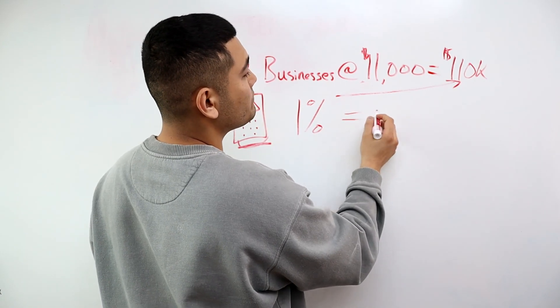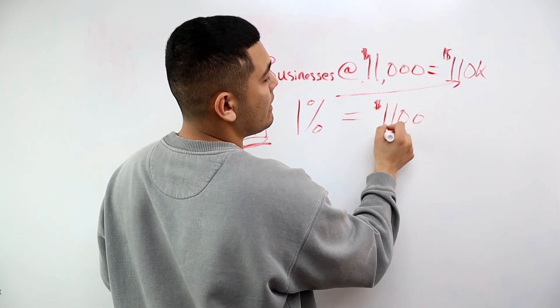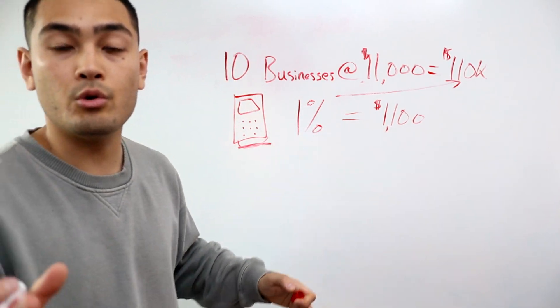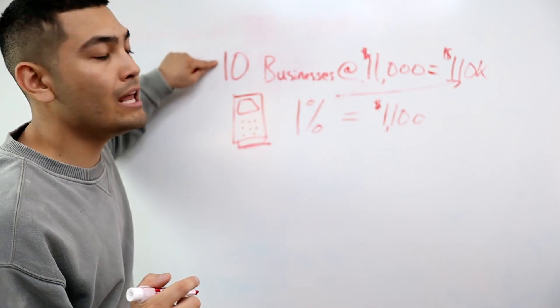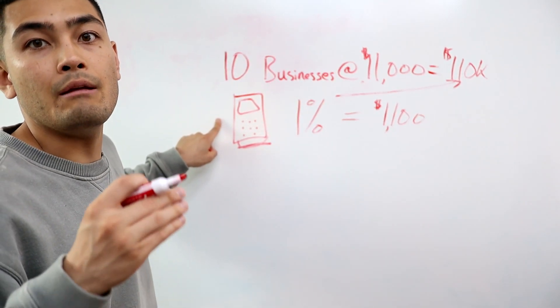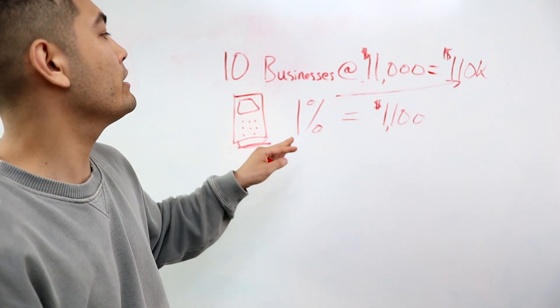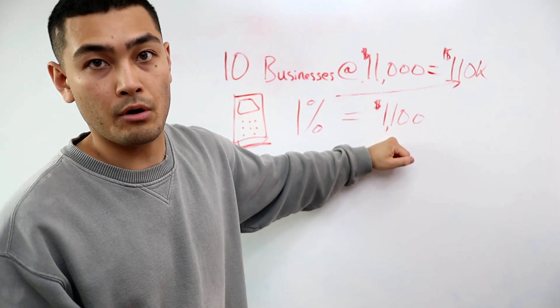And that actually comes out to $1,100 every single month in pure residual income, because you did the work one time. You set all 10 business owners up with credit card readers, and because of that you're going to get rewarded via your 1% commission of $1,100 per month.